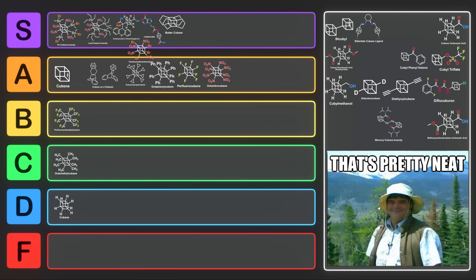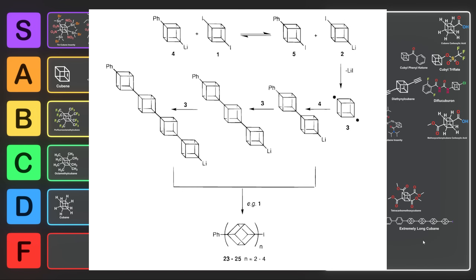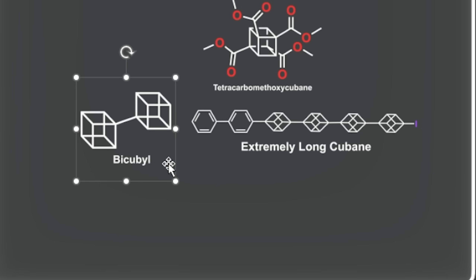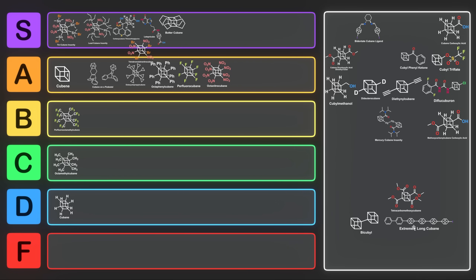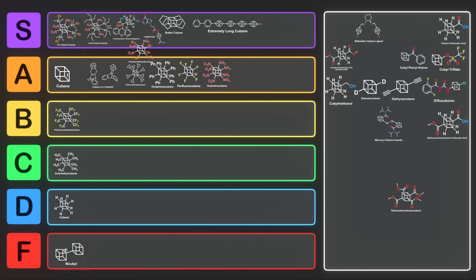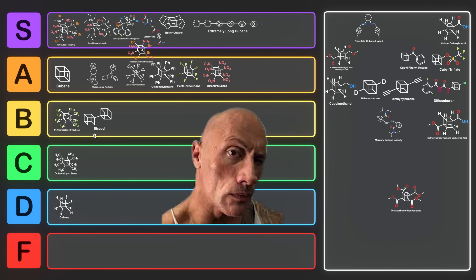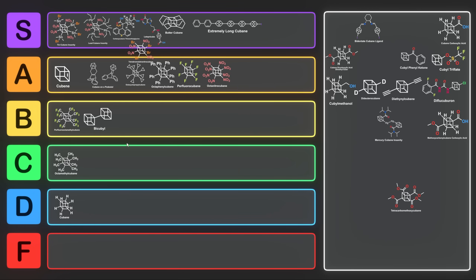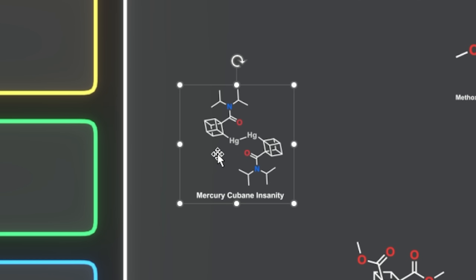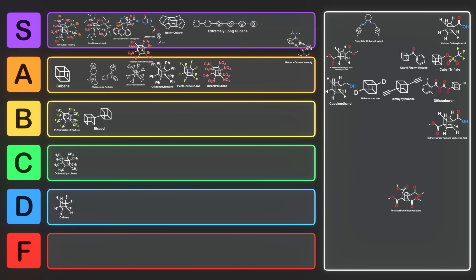There are a couple of other crazy ones — such as bicubal. Two cubanes joined together is pretty impressive. There's a paper where they made all sorts of crazy long cubane derivatives, but four cubanes versus two — four is just so much more impressive that two cubanes almost goes into F tier. But two cubes is better than one cube, so let's put bicubal into B tier. Next we have mercury cubane insanity: two mercuries connecting two cubanes together. That is so cursed — right into S tier.